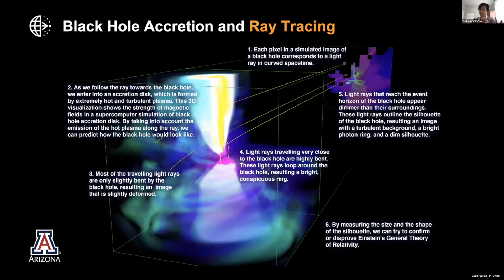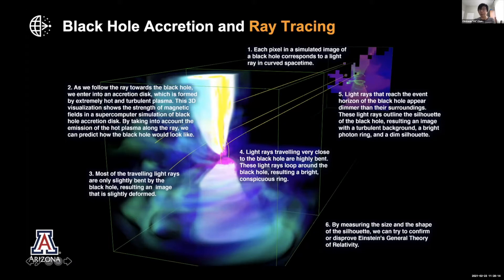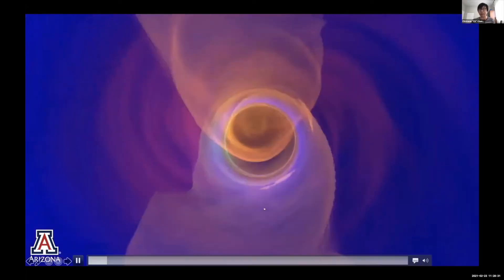In reality things are more complicated because plasma falls into the black hole. This visualization shows how we model the actual situation. There is a black hole at the center, and we use HPC simulation to follow the plasma around it — this volume rendering is the magnetic field generated by that plasma. To simulate an image, we create a virtual camera and trace each pixel back to the black hole. For pixels very close to the black hole, light rays orbit around it and create interesting features.